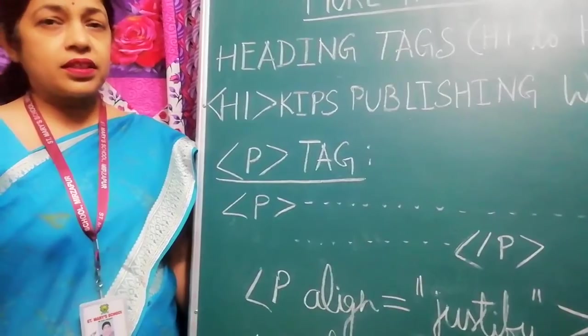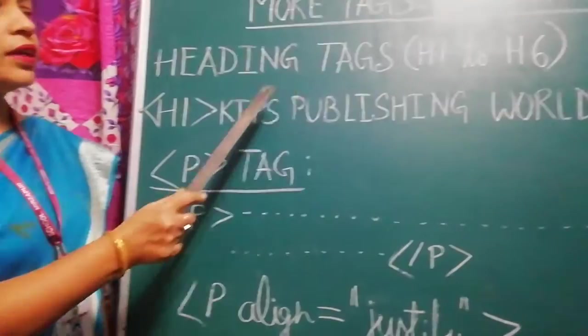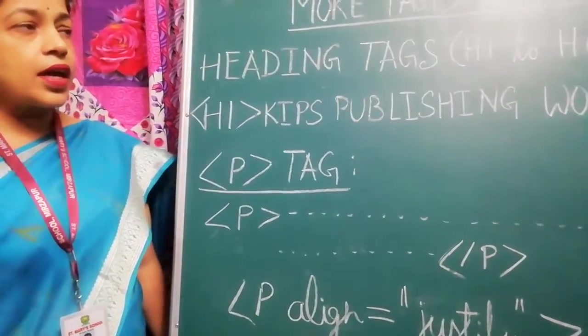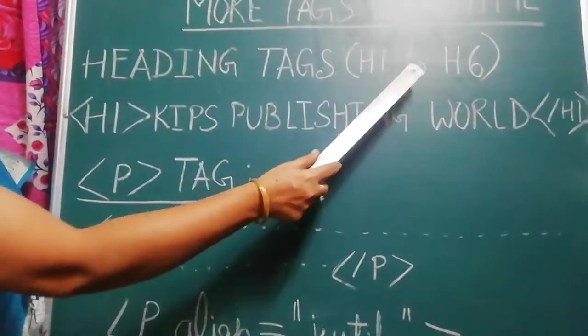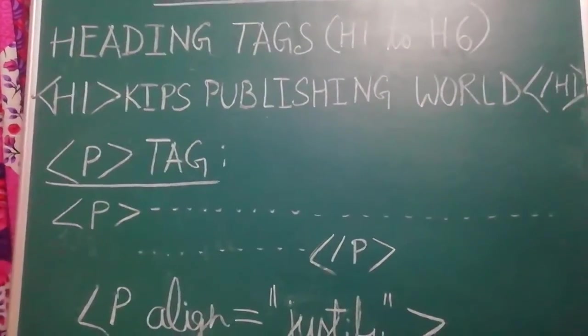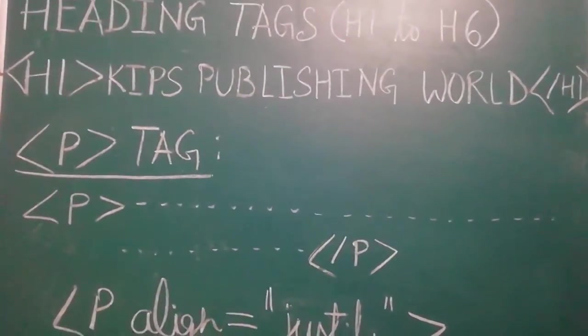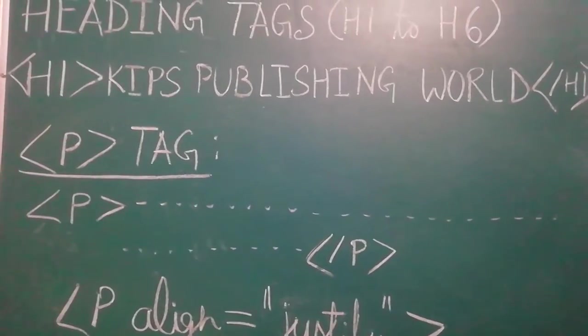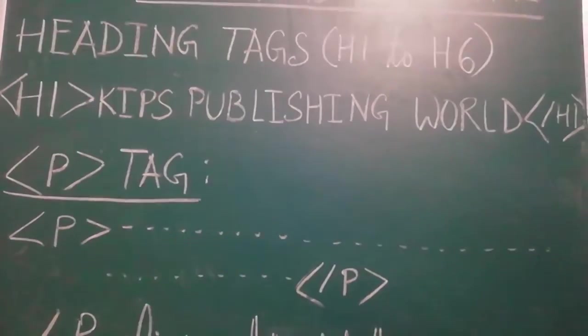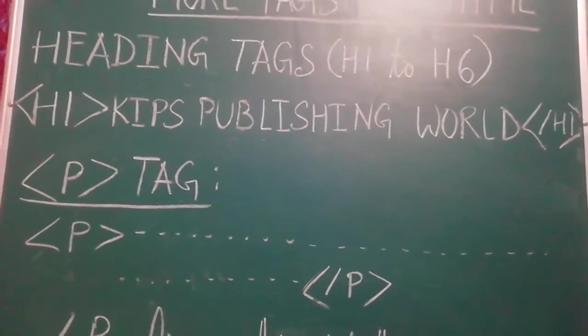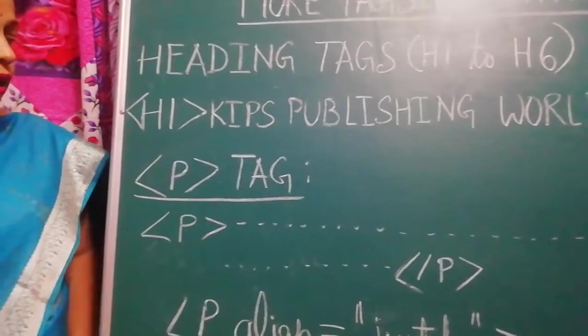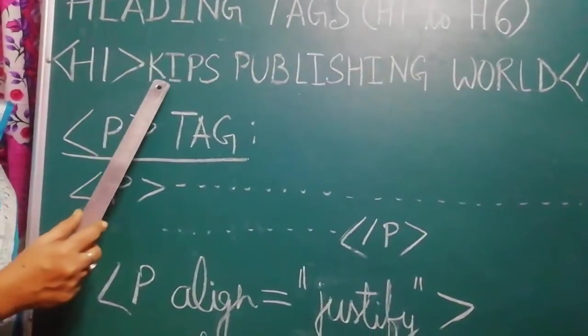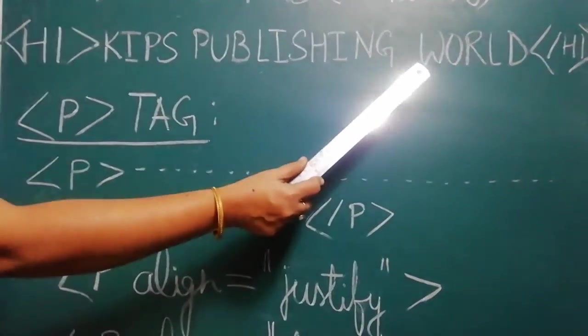The first tag that I will teach you today is Heading Tag. Heading Tags are mainly used to emphasize the text. There are 6 heading levels from H1 to H6. H1 Heading Tag displays the text in the largest size and is mainly used for the main headings. The lower levels like H5 or H6 are used for subheadings and less important things. As I have written here in the H1 Tag, KIPS Publishing World, this text will appear as the main heading.